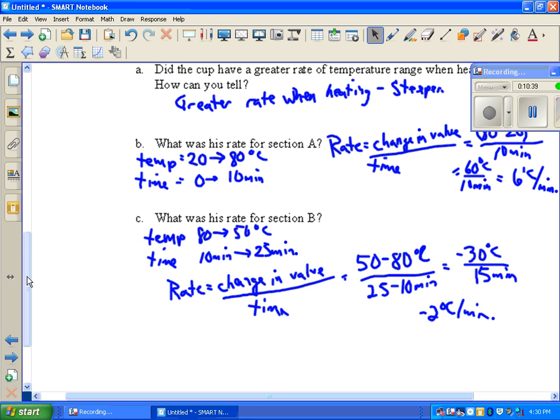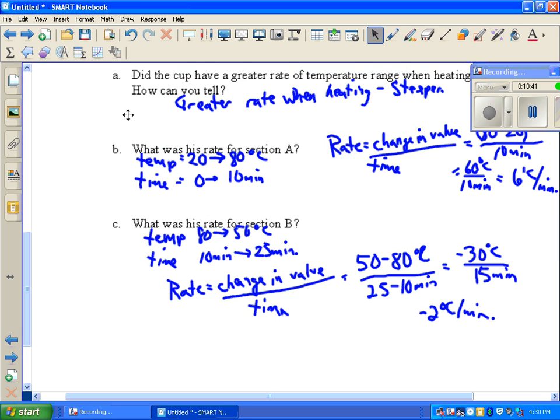We said that the rate was going to be greater in section A, and it was. It was 6 degrees Celsius per minute compared to 2. So at the end of this lesson, you should be able to look at a graph and identify if it is a direct, cyclical, or inverse type of relationship. Or if somebody gives you the description of a relationship, you should be able to tell if it's direct or inverse or cyclical and know what the graph would look like. And you also need to be able to calculate rates.